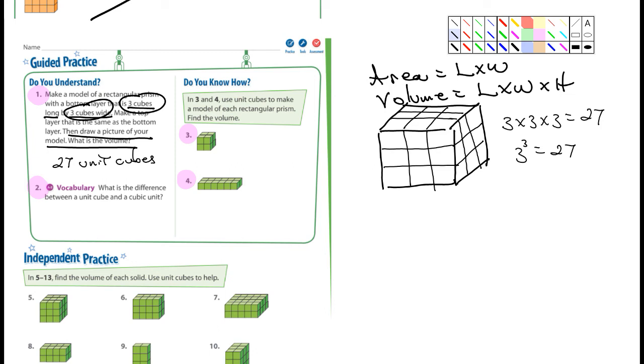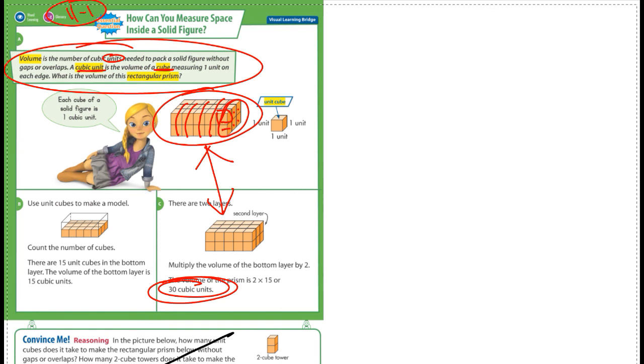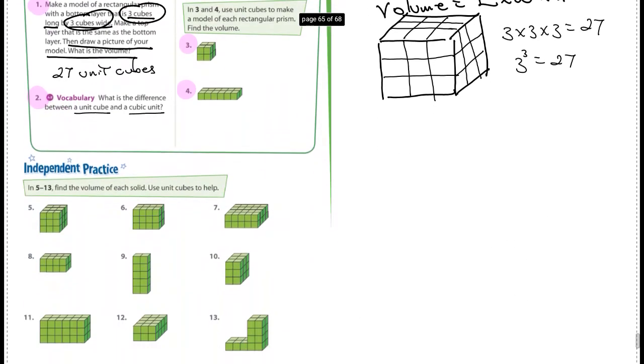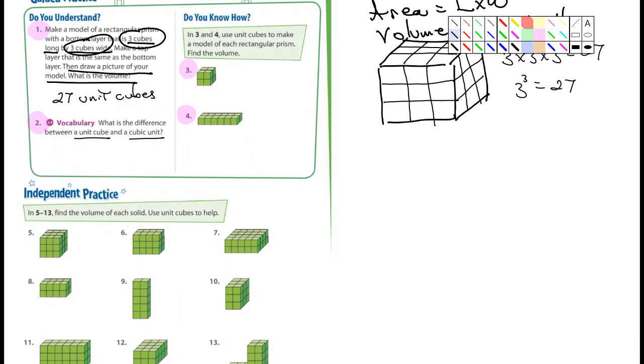Now, number two here that I want you to do. It says, what's the difference between a unit cube and a cube unit? Well, it's right here at the top of that page that we read and we talked about just a few minutes ago. Number three and four, it says use unit cubes to make a model of each rectangular prism and find the volume. So it says to make a model. You've got to draw your own. You've got to draw one like number three and draw one like number four. You just have to copy it. But then it does say find the volume. So you're going to have to figure out the volume. And again, the volume would be unit cubes.